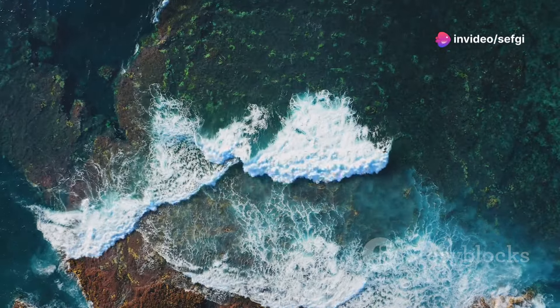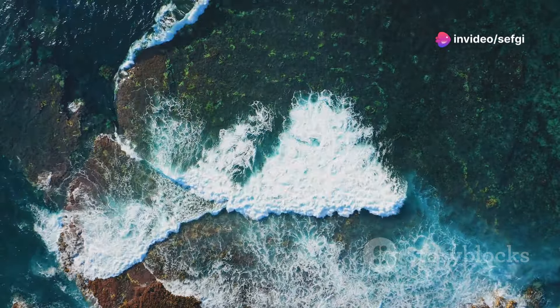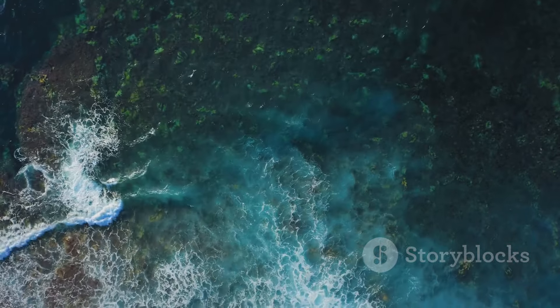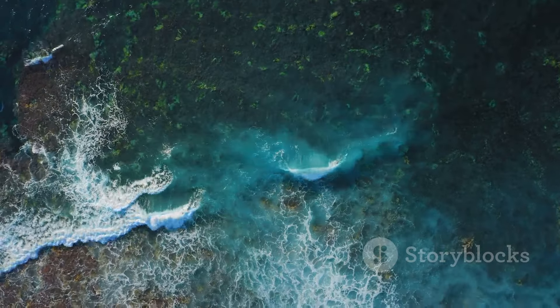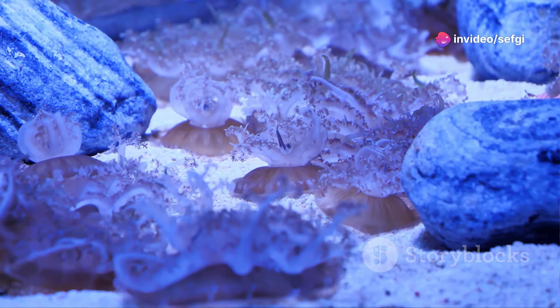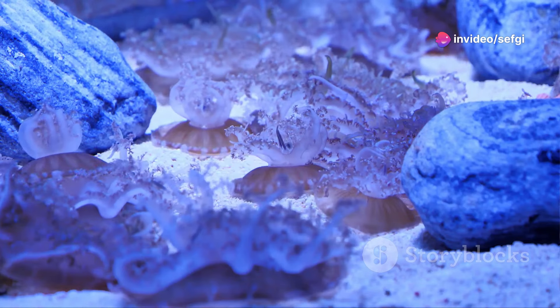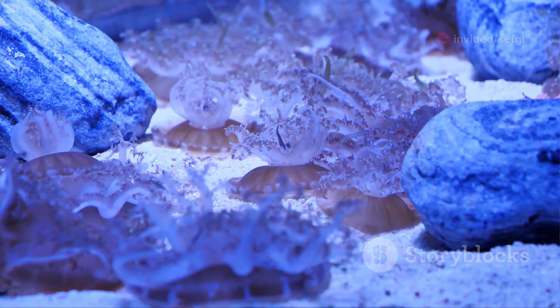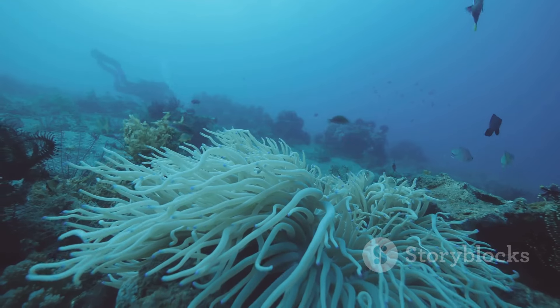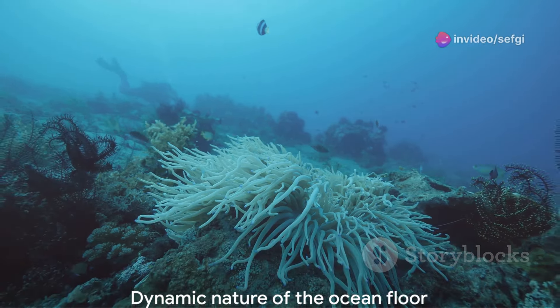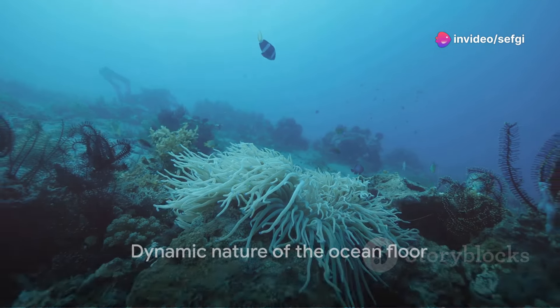But what happens to this old crust? Well, it doesn't just pile up. Instead, it's pushed towards deep ocean trenches by the movement of tectonic plates. These trenches are the deepest parts of our oceans. Here, the old crust is forced or subducted back into the mantle. And what about seamounts? These are underwater mountains and they're constantly being created and destroyed through these same processes. They rise from the seafloor, but over millions of years they too are pushed back down into the mantle. So the ocean floor is more dynamic than it appears.